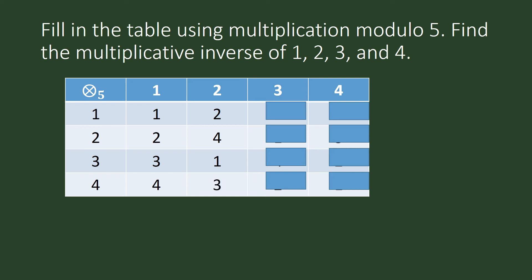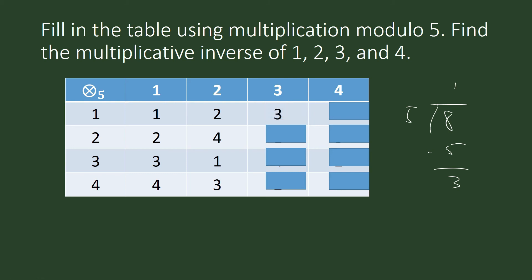2 times 4 is 8, and 4 times 2 is congruent to 3 modulo 5. 3 times 2 is 6, which is congruent to 1 modulo 5. 3 times 3 is 9, congruent to 4 modulo 5. 3 times 4 is 12, congruent to 2 modulo 5. 4 times 1 is 4.